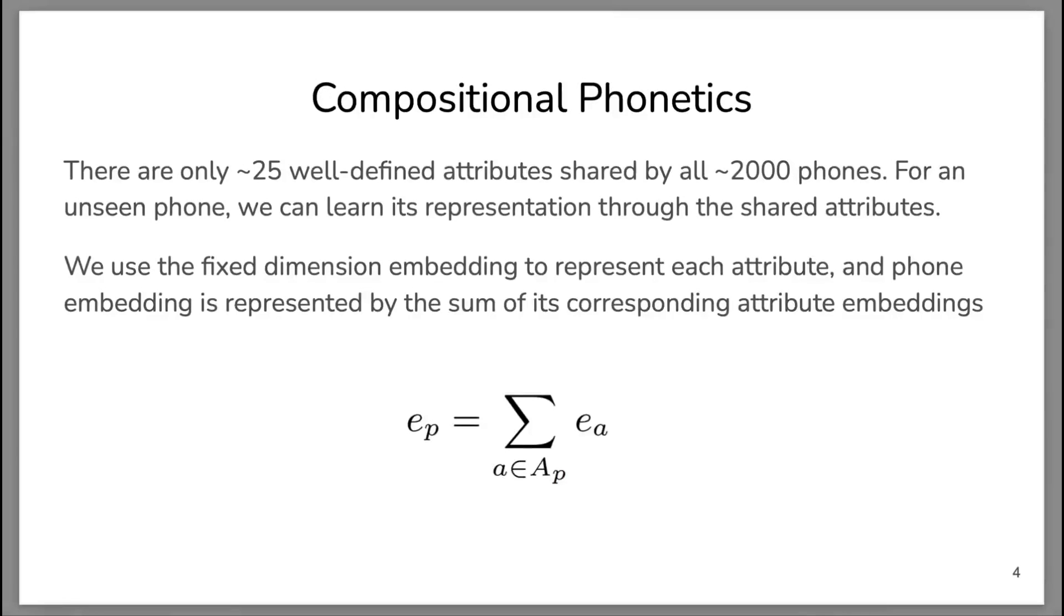A key advantage of using attributes instead of phones is that there are only around 25 well-defined attributes shared by all phones. So even for an unseen phone, we can learn its representation through the shared attributes.